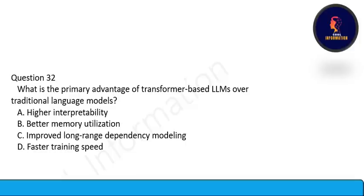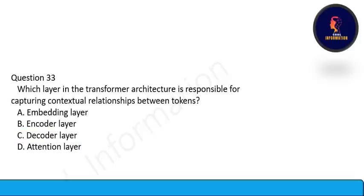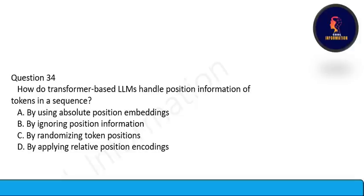Next question: What is the primary advantage of transformer-based LLMs over traditional language models? The answer here is improved long-range dependency modeling. Option C is correct. Next: Which layer in the transformer architecture is responsible for capturing contextual relationships between tokens? The attention layer is the correct option. How do transformer-based LLMs handle position information of tokens in a sequence? By using absolute positional embeddings. Option A is correct.